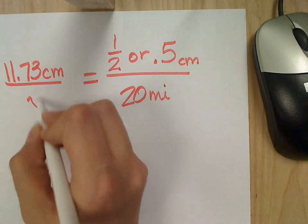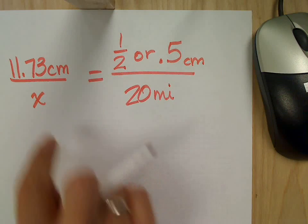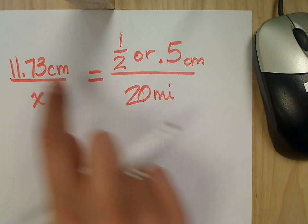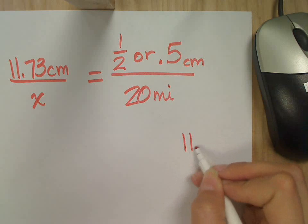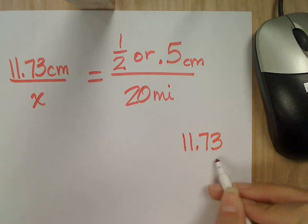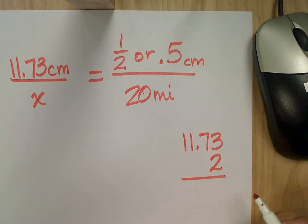And then cross multiply. So we've got 11.73 times 20. Pull to the side, work that out. And I'm going to multiply by 2 and then just add a 0 at the end. Watch how that works.